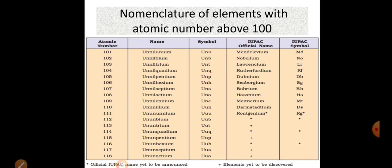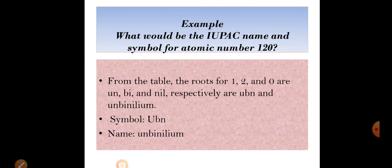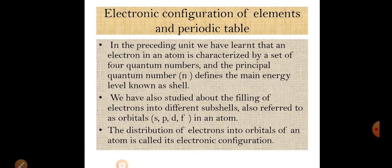Example: What would be the IUPAC name and symbol for atomic number 120? One = un, two = bi, zero = nil. The suffix is -ium. So the IUPAC name for 120 would be unbinilium. The symbol would be UBN.